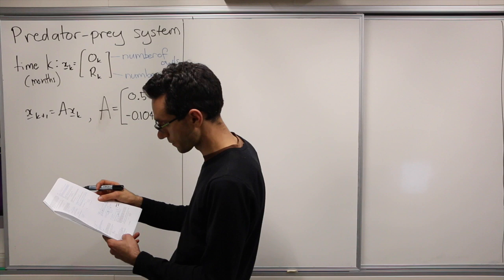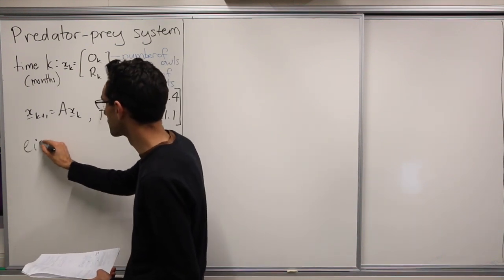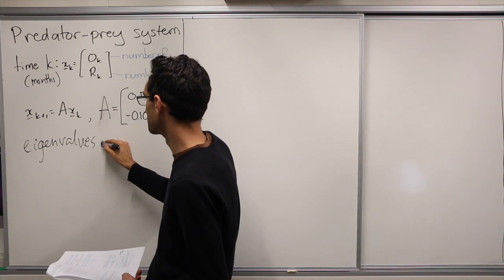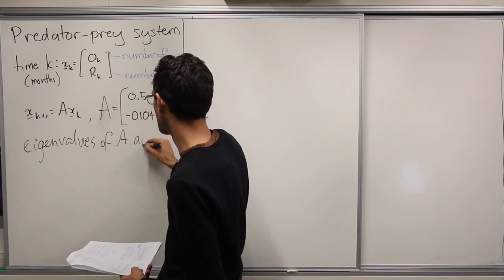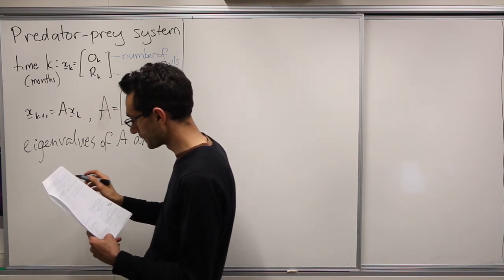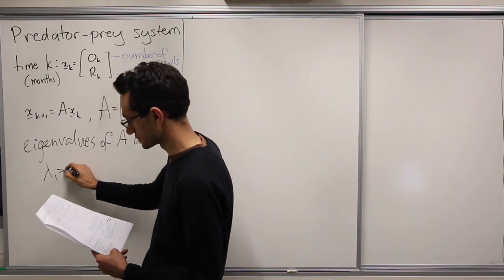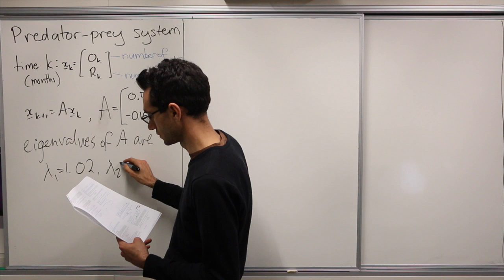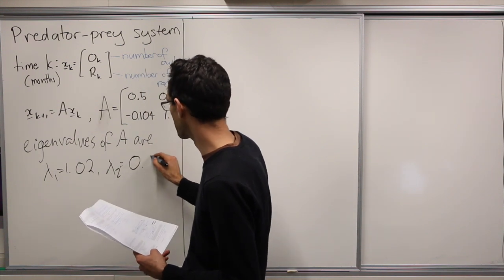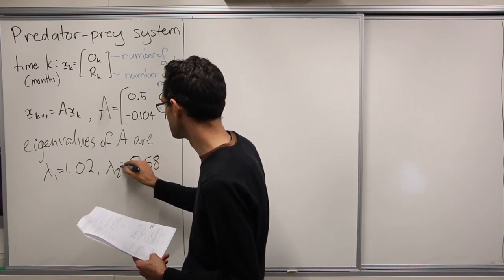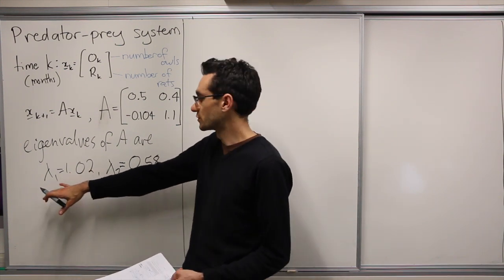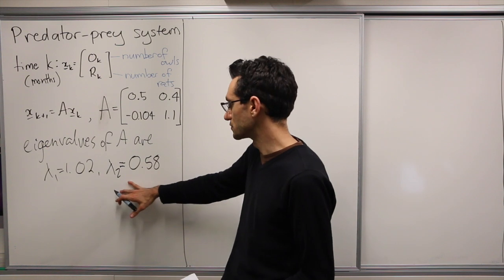So the eigenvalues of A are lambda 1, which is 1.02, and lambda 2, which is 0.58. Here we have one eigenvalue which is larger than 1 in magnitude and one is smaller than 1 in magnitude.